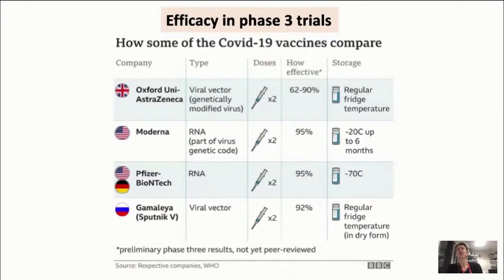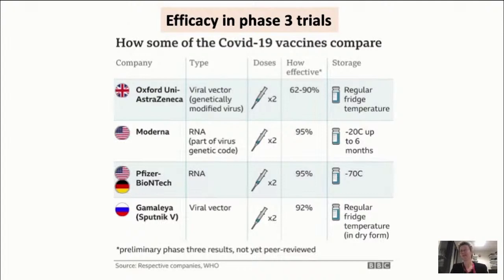On phase 3 efficacy — as summarized by the BBC: the Oxford ChAdOx1 COVID-19 vaccine shows 62-90% efficacy, Moderna 95%, Pfizer 95%, and the Sputnik V using Ad5 followed by Ad26 also 92%. These are very, very good results. One practical difference is storage: the mRNA vaccines still require freezing rather than fridge storage.